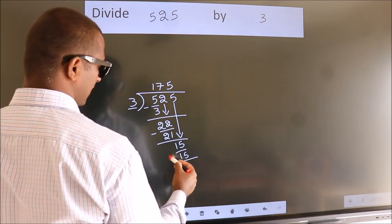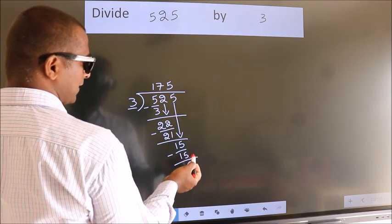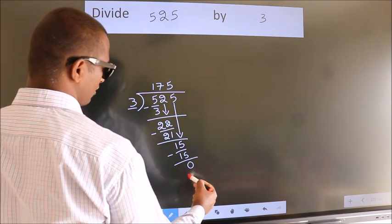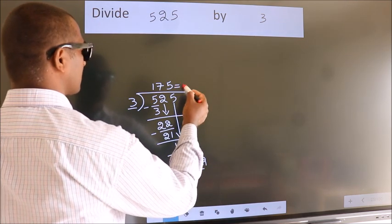Now we subtract. We get 0. No more numbers to bring down. So we stop here. This is our remainder. This is our quotient.